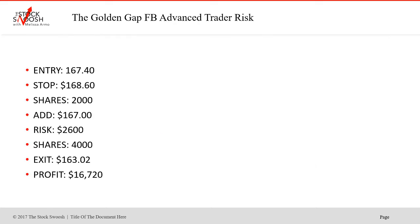This was the day trade in Facebook. The initial entry was at $167.40 with a stop at $168.60. The first entry in the morning — this wasn't even aggressive — was 2,000 shares. This is an advanced trader risk level. An add was around $167, bringing the total share quantity to 4,000, with total risk of $2,600.